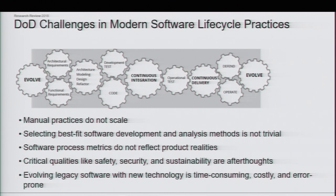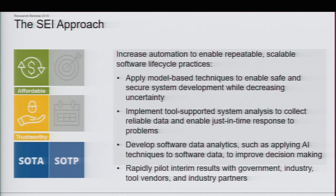Critical qualities like safety and security and sustainability only come up late in system and software development, even though you can't bolt that stuff on — it has to be integral to the system and developed throughout the product's life cycle. Program managers don't really have insight into the actual state of the software, either from a security or a sustainability perspective. But these are the challenges we're addressing at the SEI, and central to how we think these challenges should be addressed is by increasing automation.